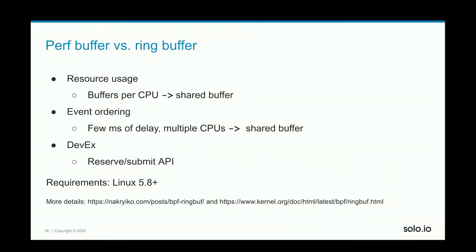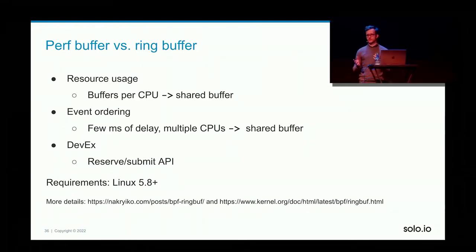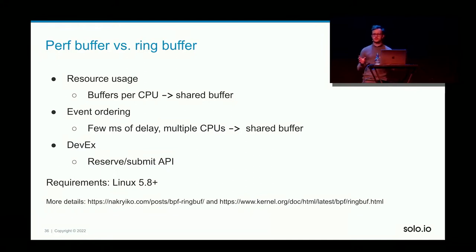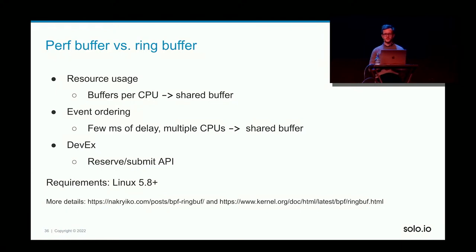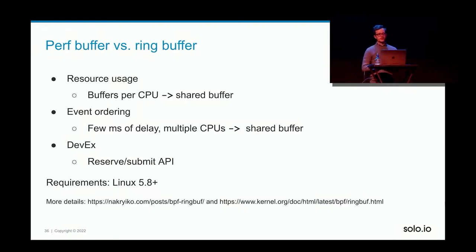On this slide you can see a few differences between PerfBuffer and RingBuffer. One uses per-CPU buffers, the other uses a shared buffer. There are performance differences, event ordering is much better with RingBuffer, and the developer experience is also better, including a reserve-submit API for writing cleaner code. The requirement is a fairly new Linux version, but most cloud providers are already shipping Linux versions newer than the minimum needed.